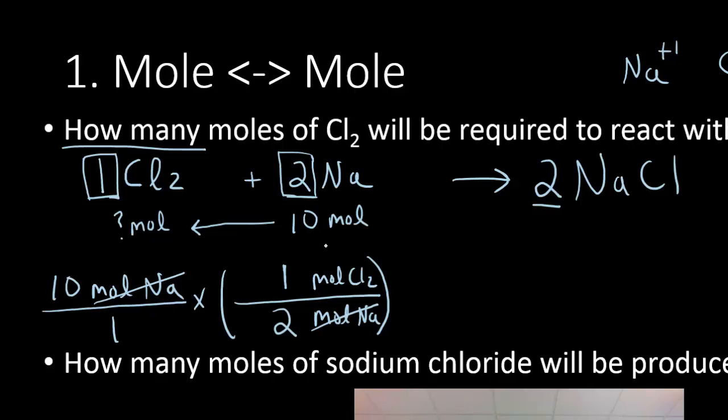So once I've pulled out my mole to mole ratio from the balanced equation, now it's business as usual. Multiply across the top, divide across the bottom. 10 times 1 divided by 2 gives me 5, and the unit left standing is moles of Cl2. There's my final answer. It's how many moles it costs me to make.